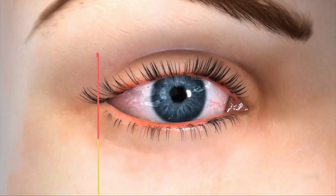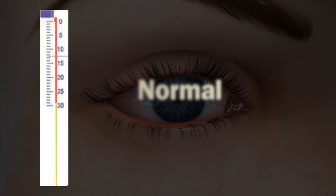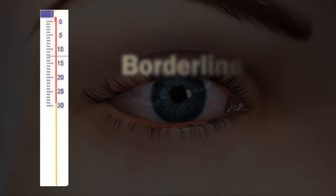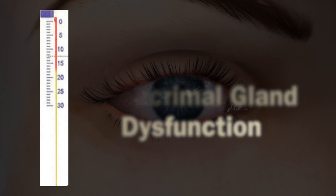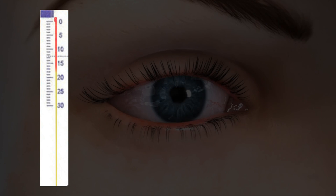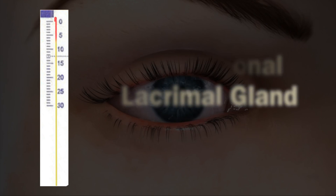Normal lacrimal gland function is found if the red thread length measures greater than 20 mm. Borderline dysfunction is present if the red length measures 10–20 mm. Lacrimal gland dysfunction is present if less than 10 mm.